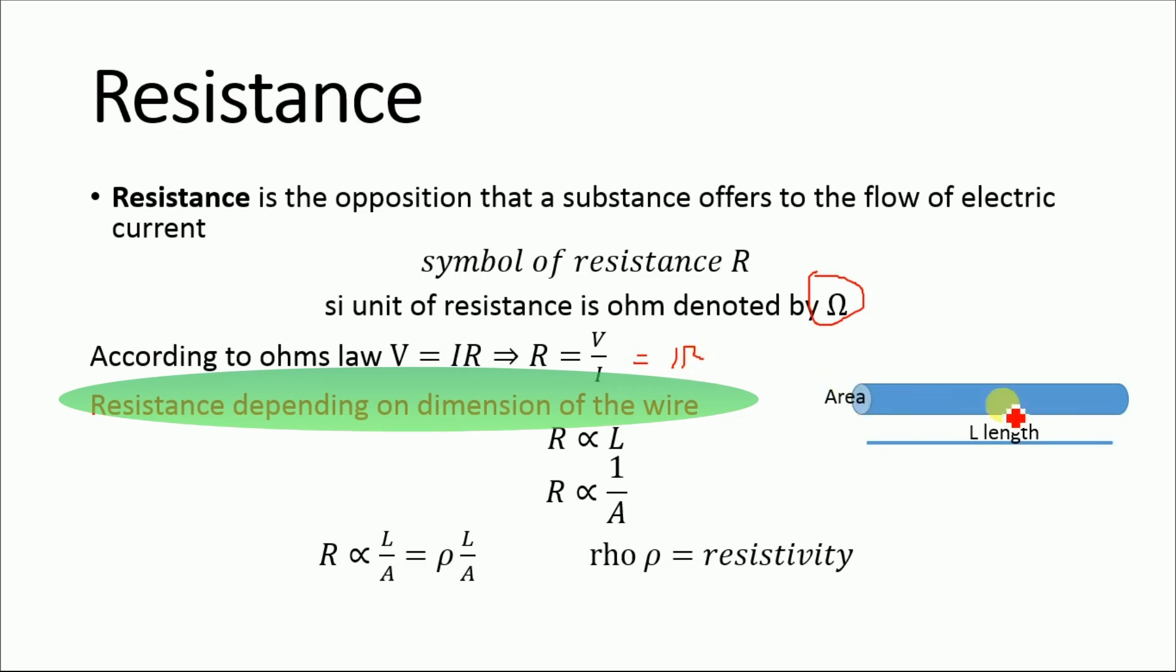For example, if we have a wire with length L and cross-sectional area A, the resistance is directly proportional to the length.